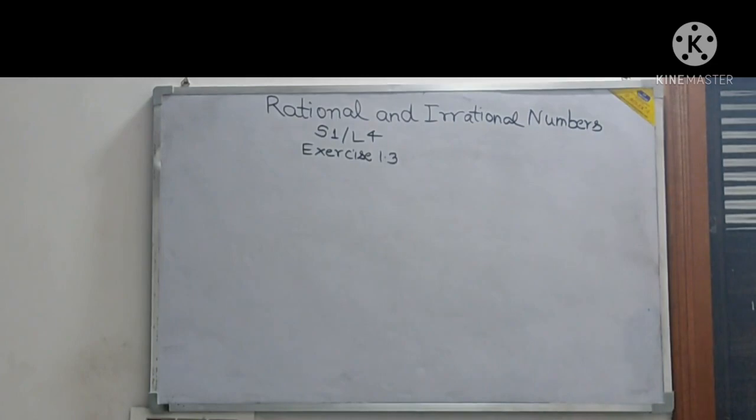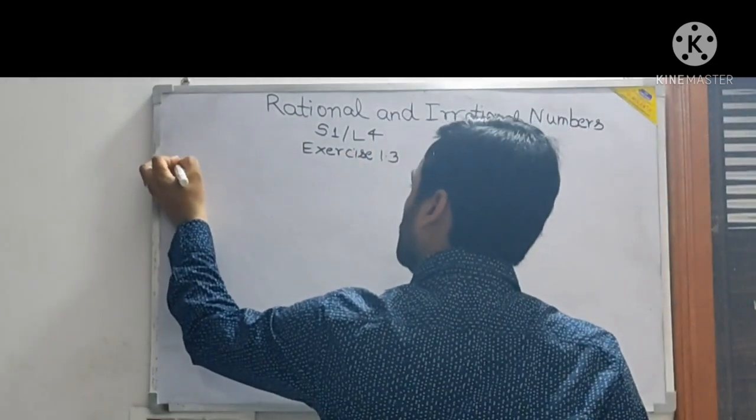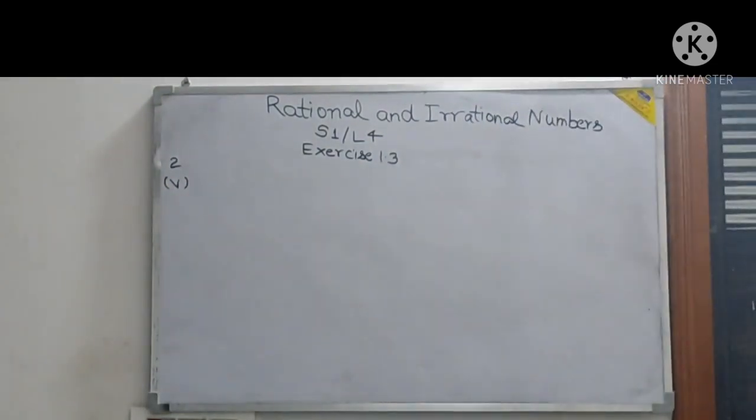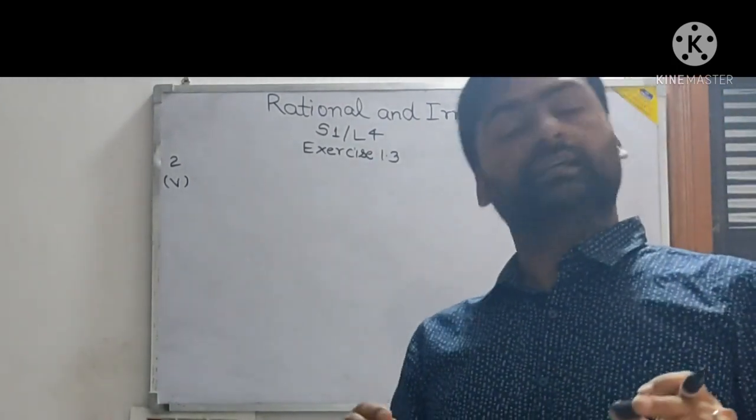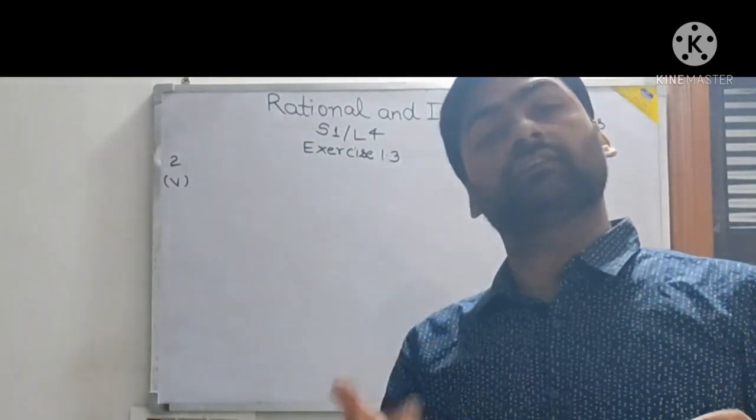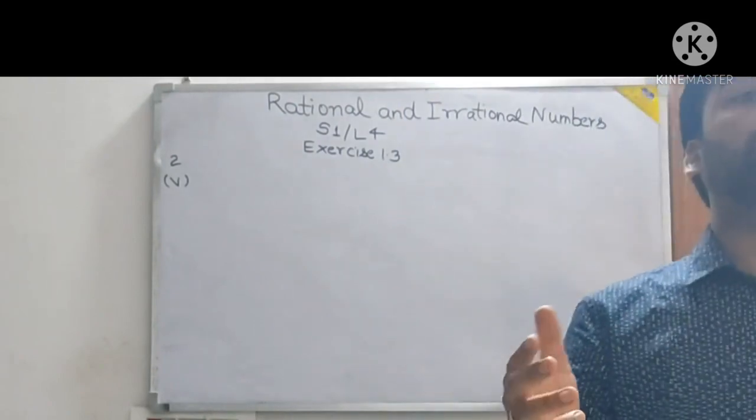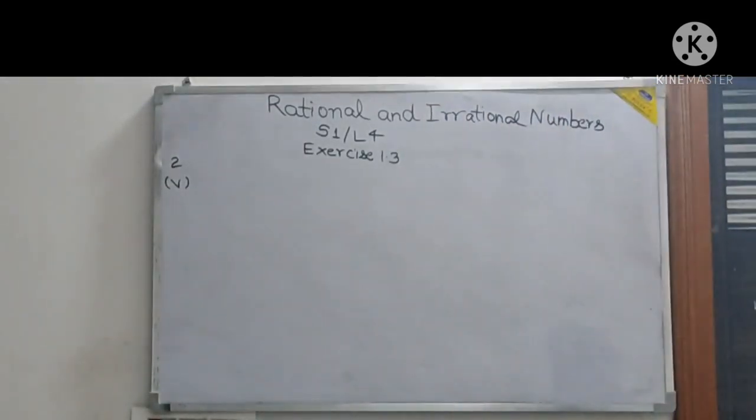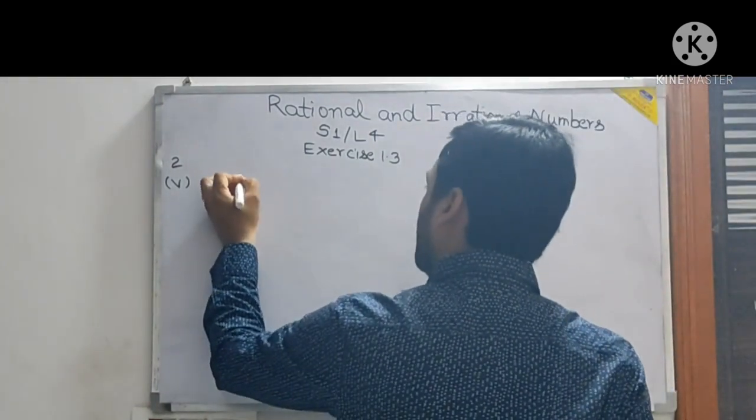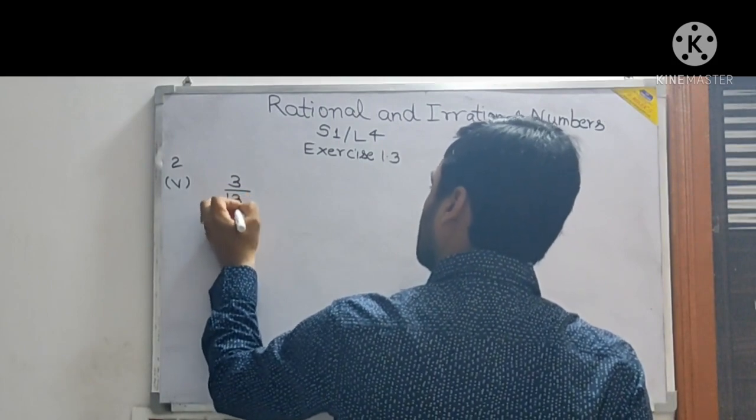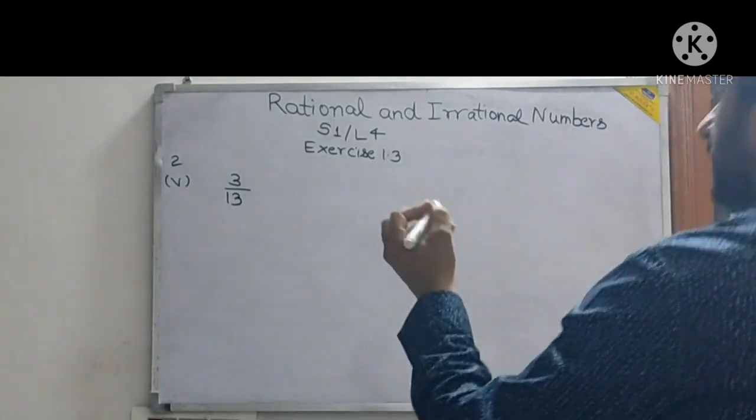From question number 2 I am taking one more part. Question number 2, the 5th part. What is it saying? Write the decimal expansion of each of the following numbers and say what kind of decimal expansion. So basically for question number 2 you have to write the decimal expansion and also tell what kind. The part is 3 by 13.